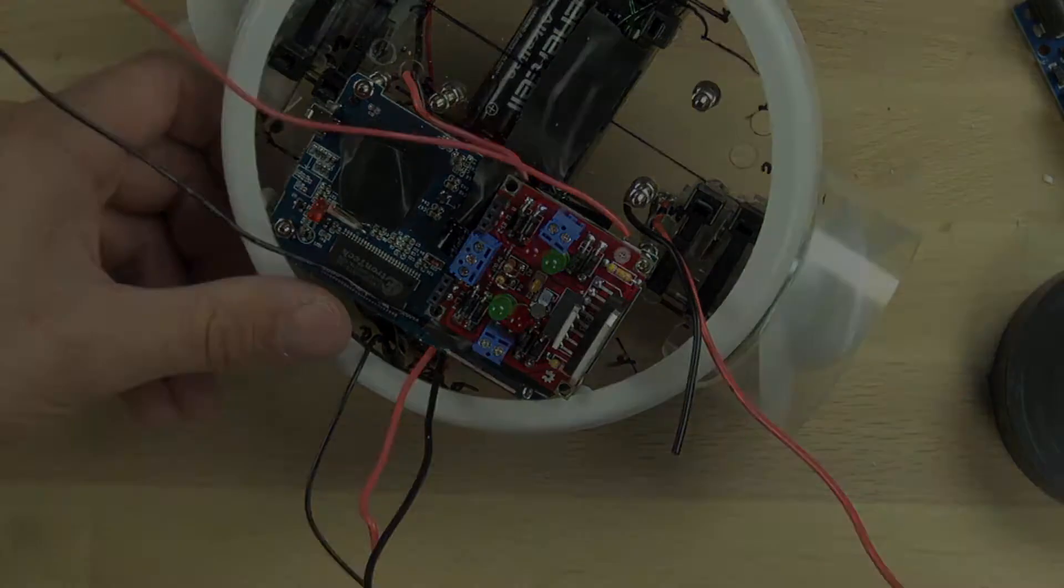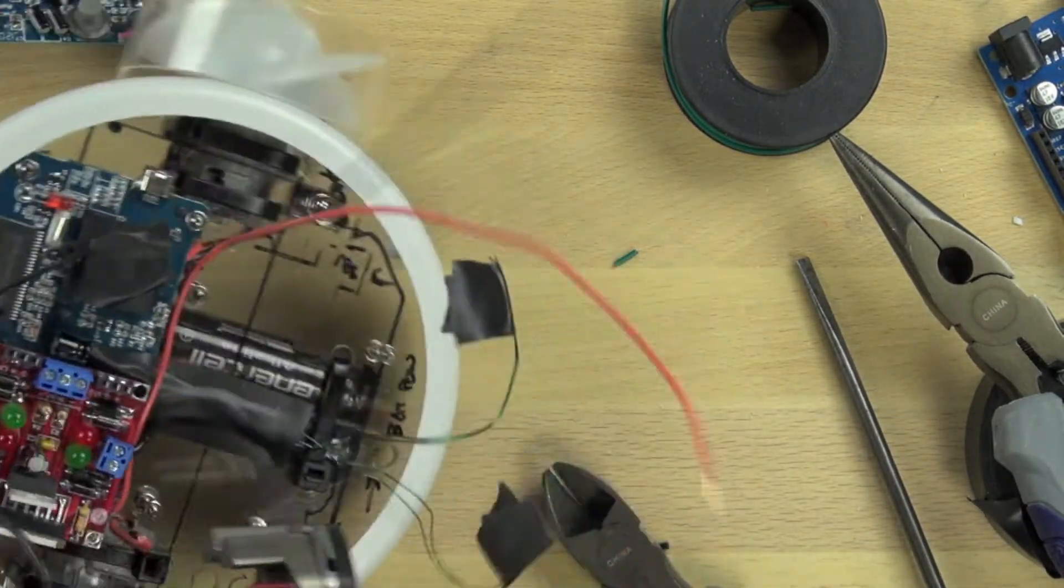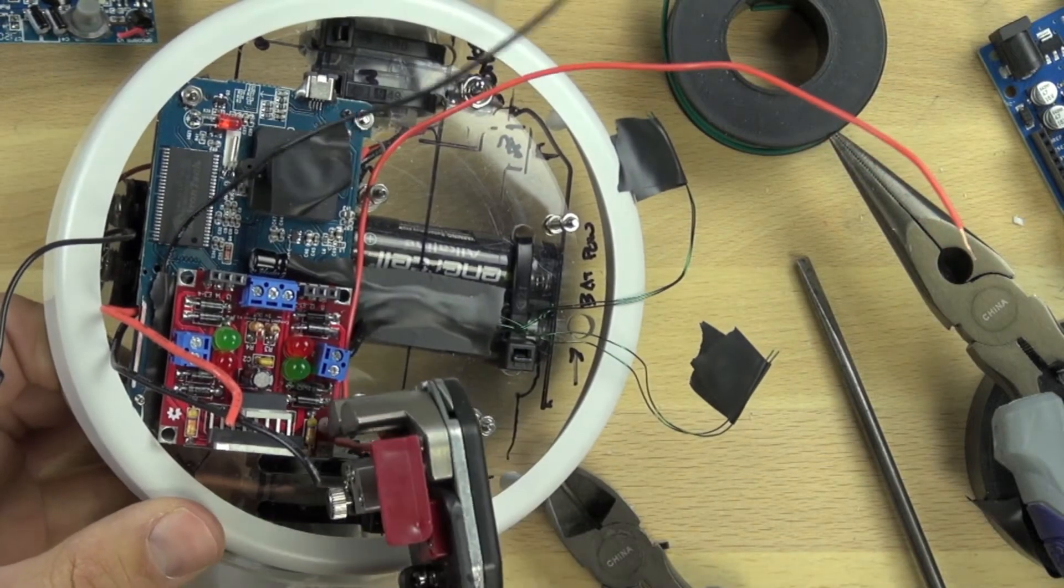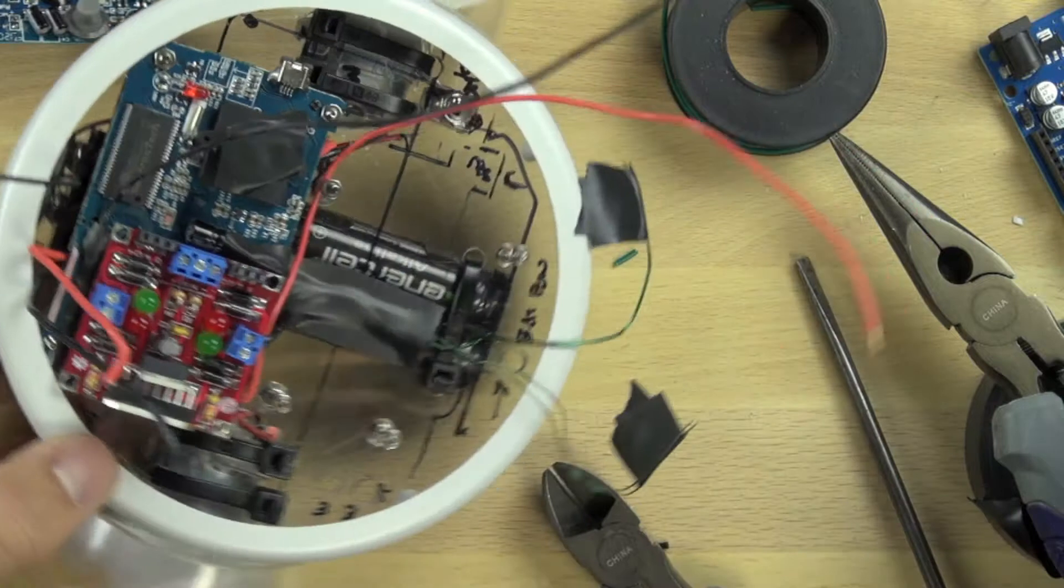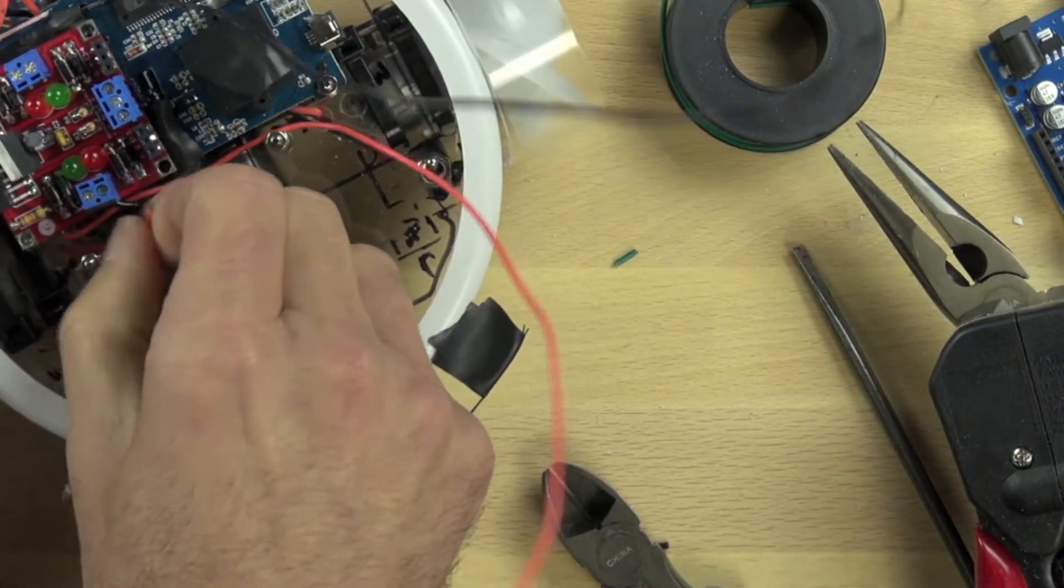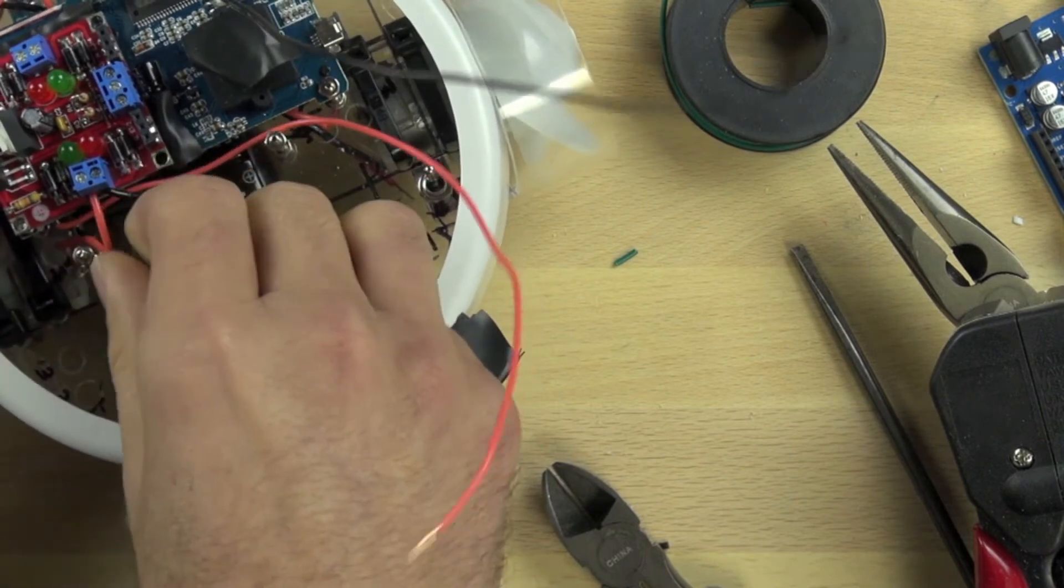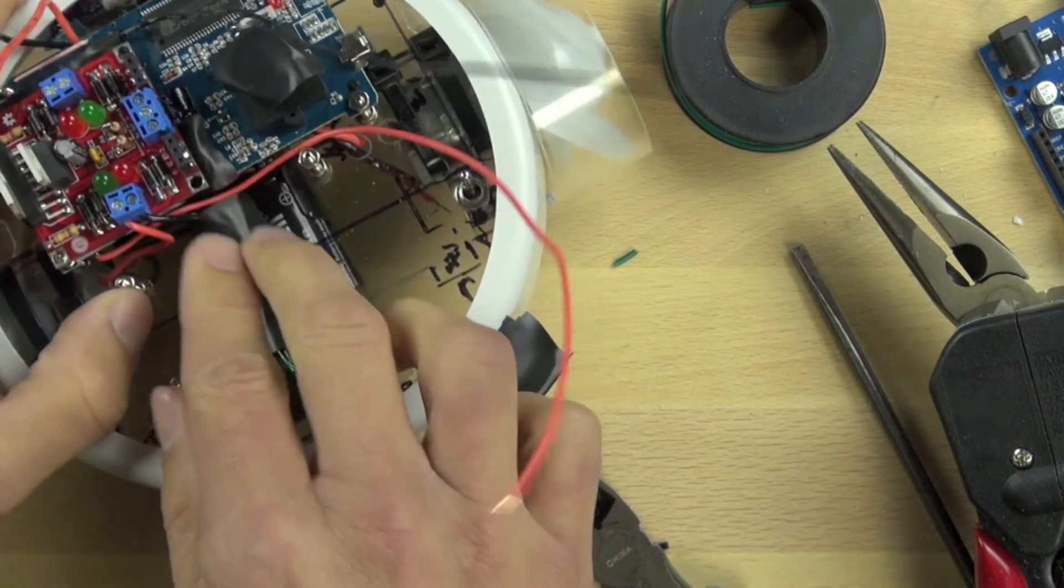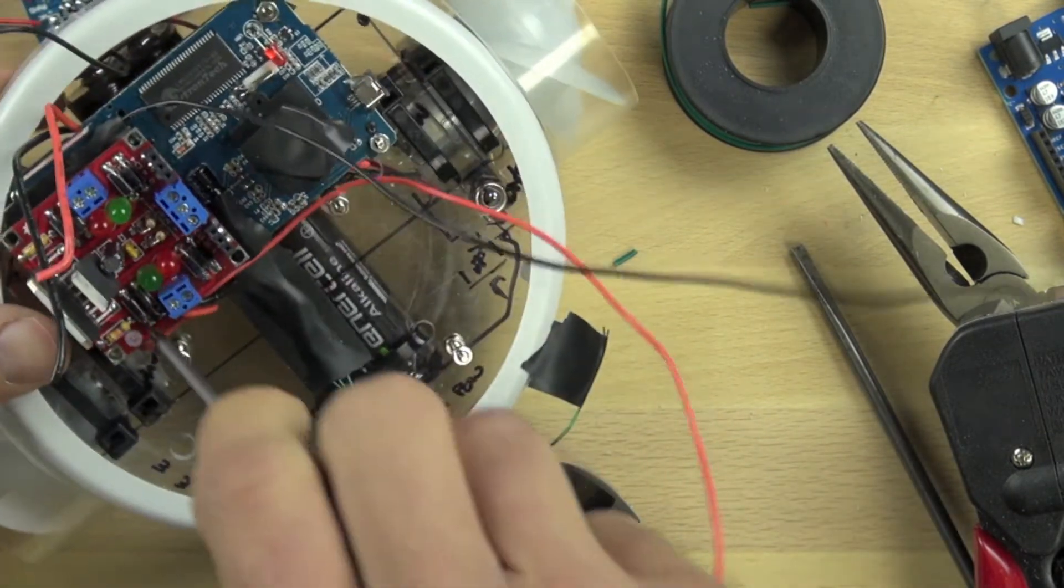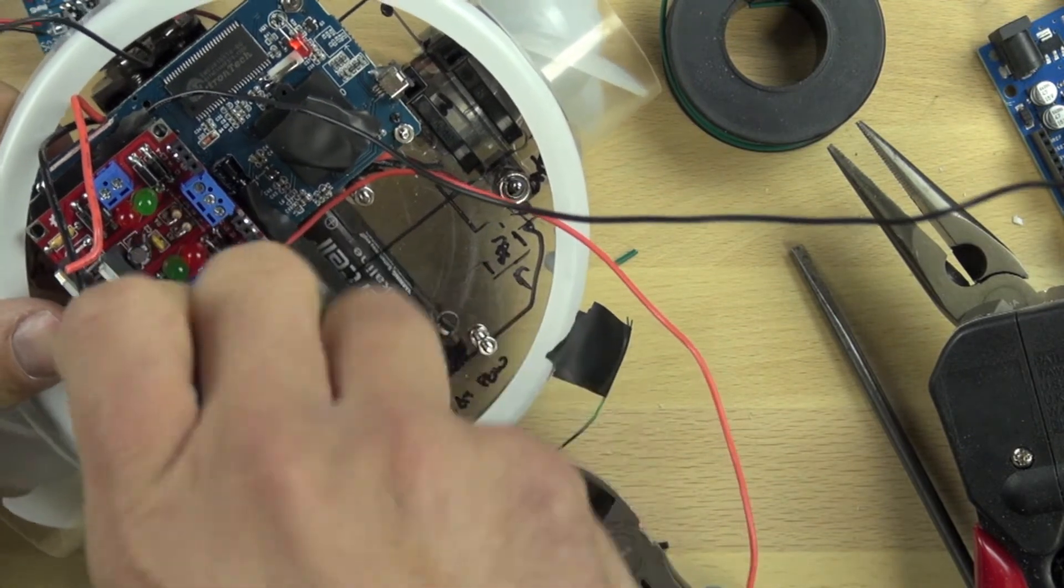Now we're stripping the wires that are going to go to our motors - those are the wires that have come up from our motors. Once we've got those stripped, we're just going to connect them to the motor block terminals. You can see we're just pushing the wire in there and then we'll tighten the screw and the motor block terminal down. That's how we wire our motors.